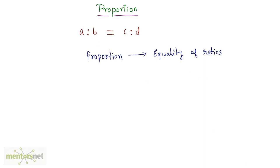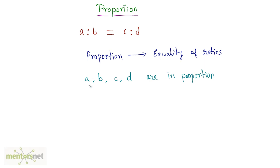These two ratios are in proportion, and so are their terms — their terms are also in proportion. A is the first proportional, B is the second proportional, C is the third, and D is the fourth proportional.